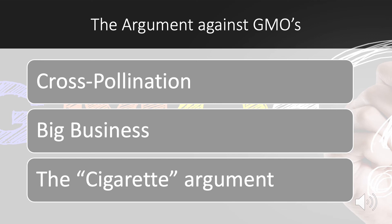The cigarette argument. Back when cigarettes were first becoming big, everyone said there were no adverse health effects or long-term health problems involved with cigarettes — or at least, it could not be proven. Today, we know that to not be true. So why couldn't GMOs be the same? Well, for one, GMOs are closely regulated and monitored by the three government departments we mentioned earlier: the FDA, the EPA, and the USDA. Two, today our technology allows us to keep much better data and information and for us to accurately predict problems in the future.